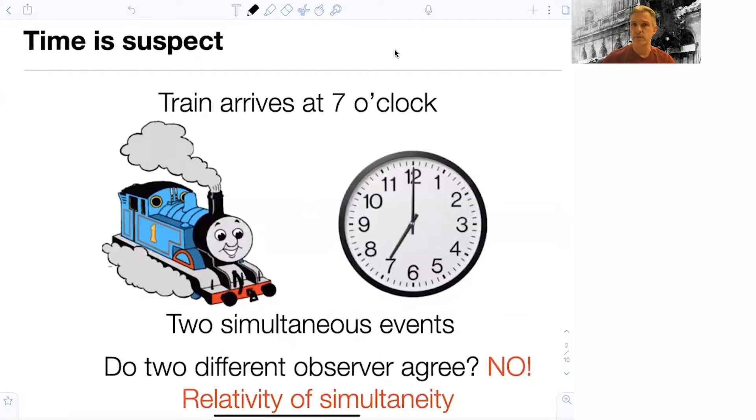What does that mean? When we make a statement like a train arrives at 7 o'clock, what we mean is that two simultaneous events happen. One is that this little clock here shows to point at 7 and 12, meaning that it indicates to us that it's 7 o'clock. And the second event is that the train actually arrives at the station. So those two events happen simultaneously.